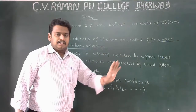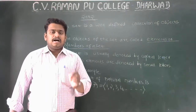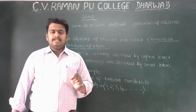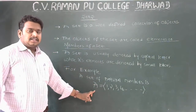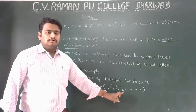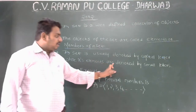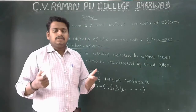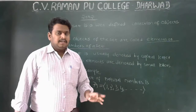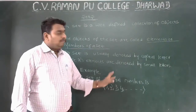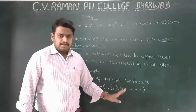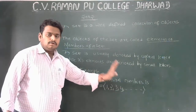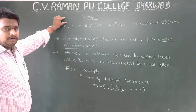A set is usually denoted by a capital letter — we can use any alphabet from A to Z to represent a set. For example, A = {1, 2, 3, ...}. Its elements are denoted by small letters. When we use alphabets as elements, we use small letters. This is the first basic concept of sets.